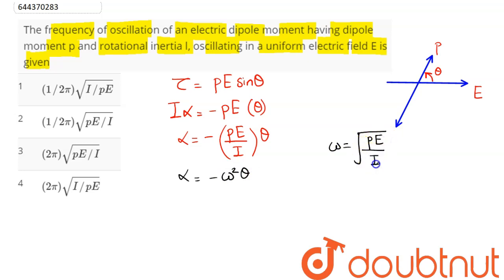This is the angular frequency, which equals 2πf. So the frequency being asked in the question comes out as f = 1/(2π)√(pE/I). Hence amongst the 4 options, we can see option number 2 as